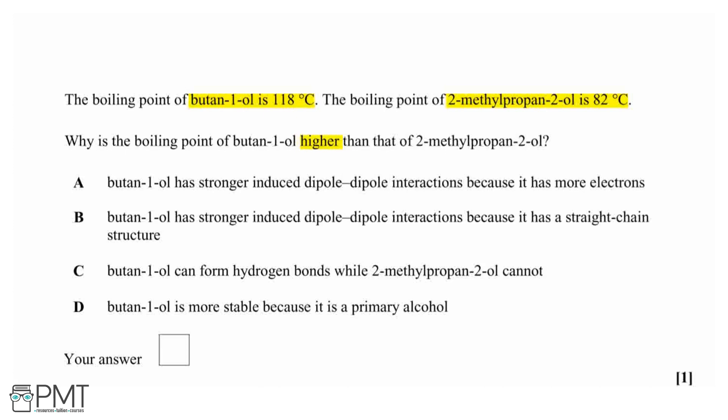So, let's start by drawing out the structures of these. Butan-1-ol has a 4-carbon chain with the alcohol group on carbon number 1, and 2-methyl-propan-2-ol has a 3-carbon chain with the methyl group on carbon number 2, and the alcohol group on carbon number 2 as well.